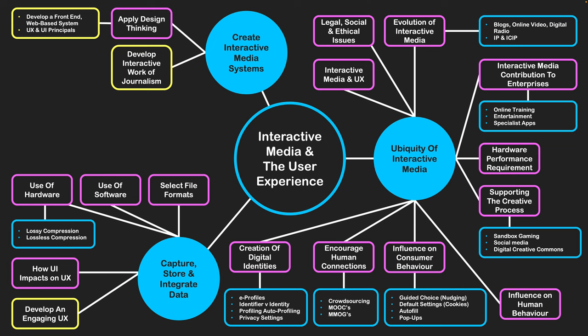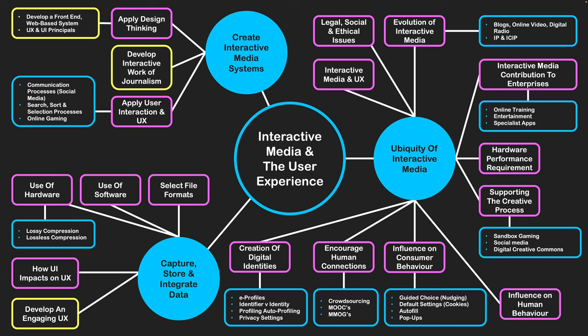For creating an interactive media system, the first step is applying design thinking — understanding the problem, planning solutions, building them, and evaluating. The unit requires developing an interactive work of journalism: creating an article or story using media types within a front-end web-based system. Applying user interaction and UX involves embedding social media functions, search and sort features, or even a game within the website to increase interactivity.